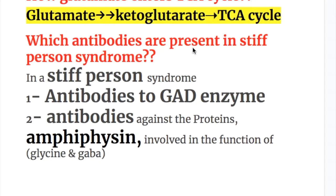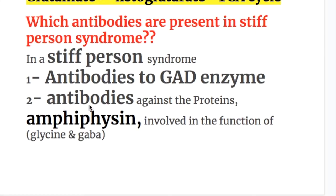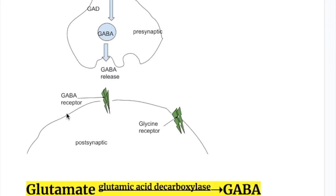In stiff person syndrome, there are two types of antibodies. First, antibodies to GAD — glutamate decarboxylase enzyme — which converts glutamate to GABA. Second, antibodies against the protein amphiphysin, involved in the function of glycine and GABA. Amphiphysin is present at the post-synaptic neuron and helps GABA bind to its receptors.